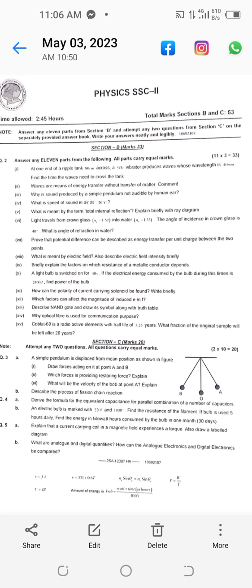Number 10: A light bulb is switched on for 40 seconds. If the electrical energy consumed by the bulb during this time is 2400 joules, find power of the bulb. Number 11: How can the polarity of current carrying solenoid be found? Write briefly.